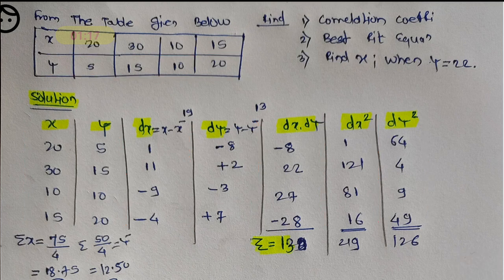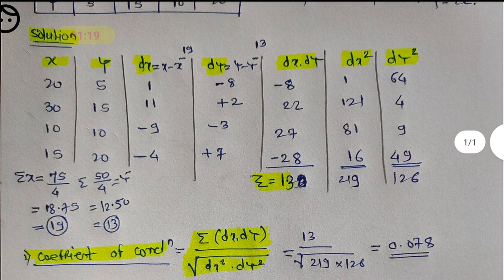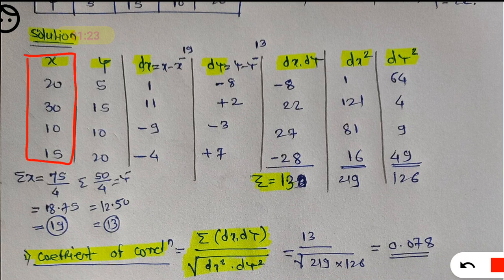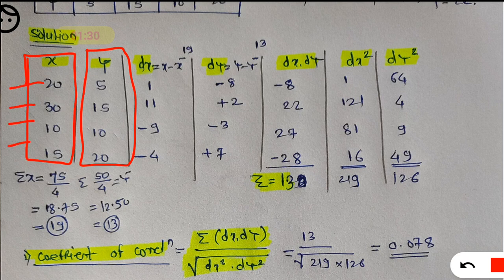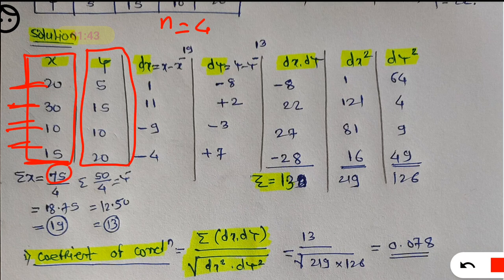Whatever the value of x they have given, you write it down as it is. Whatever the value of y they have given, you write it down as it is. Total values of x are four, so n will be four. You have to find x̄. x̄ is simply summation of x upon n. Summation of x is 20 plus 30 plus 10 plus 15, which is 75, divided by 4, giving 18.75.